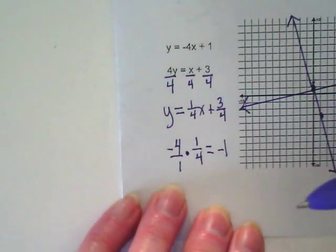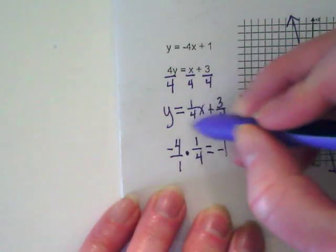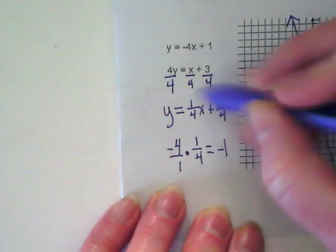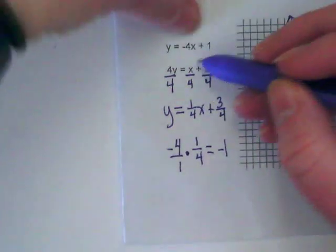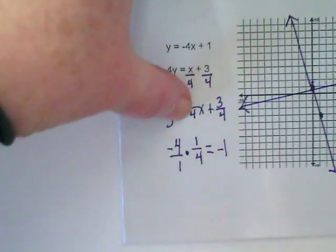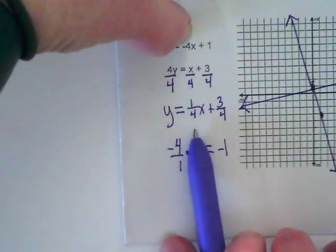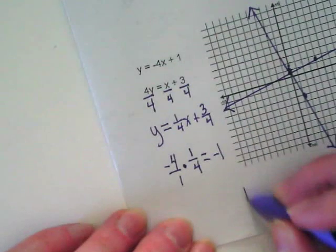Even without multiplying them, can I just think about it? If this is positive one over four, is that the opposite reciprocal of negative four? The opposite is I've got a negative and a positive. The reciprocal is four and one over four. So this one is perpendicular.